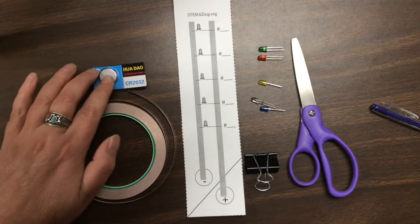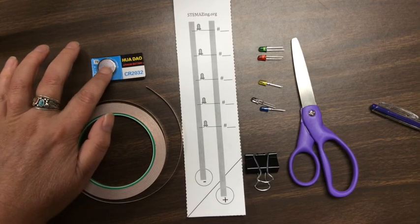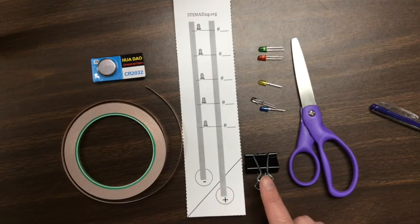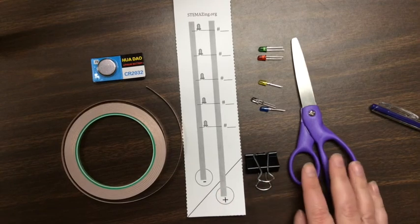You can ask people from Oregon about that. A 2032 button battery, a template from this amazing website, a medium binder clip, and scissors.